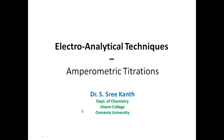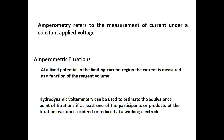We will look into another topic in electrochemical methods: amperometric titration. Amperometry refers to the measurement of current under a constant applied voltage — the voltage applied is constant, meaning it is a fixed potential, and the change in current at that potential is what is being measured.